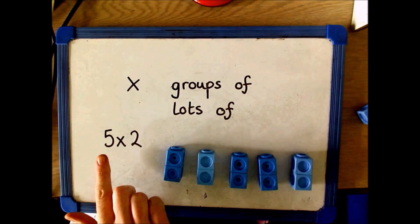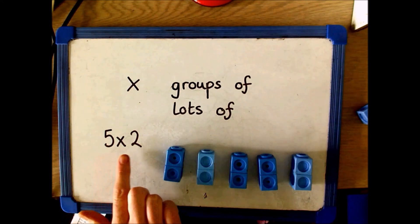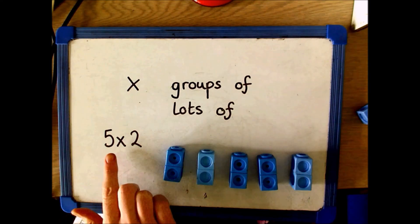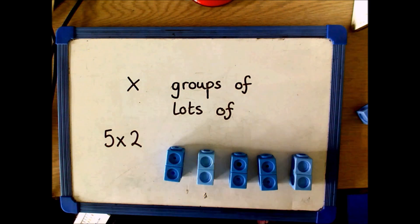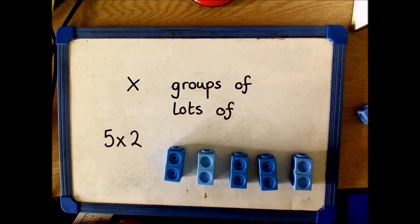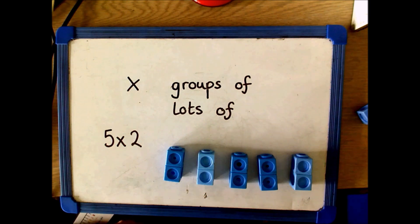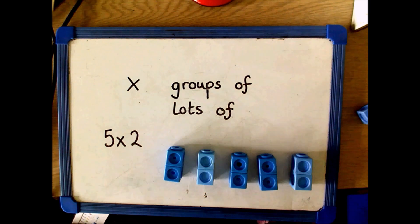Children learn that the multiplication symbol means 'groups of' or 'lots of'. For the multiplication 5 times 2, children can say '5 groups of 2'. This can be represented using objects such as counters or toys.